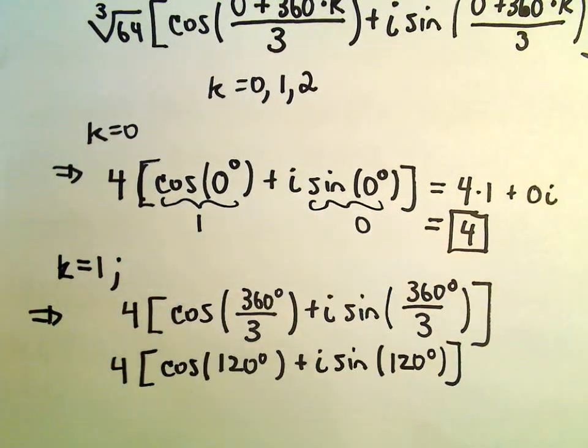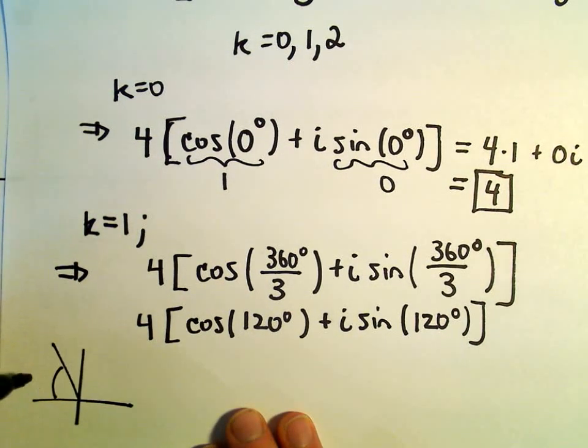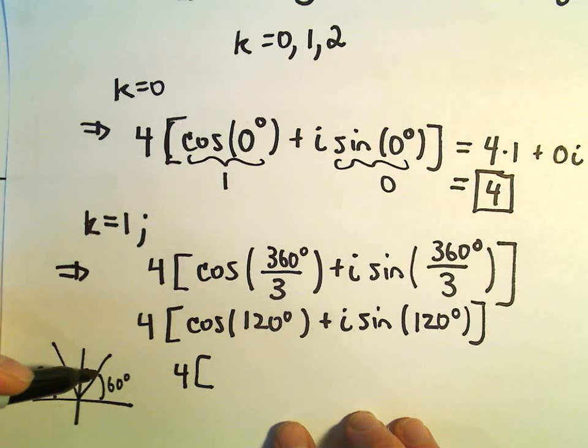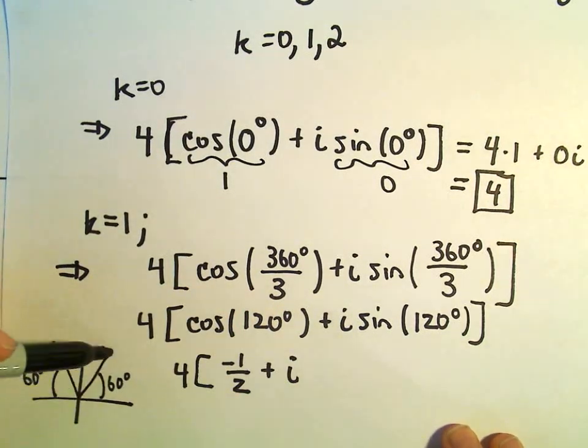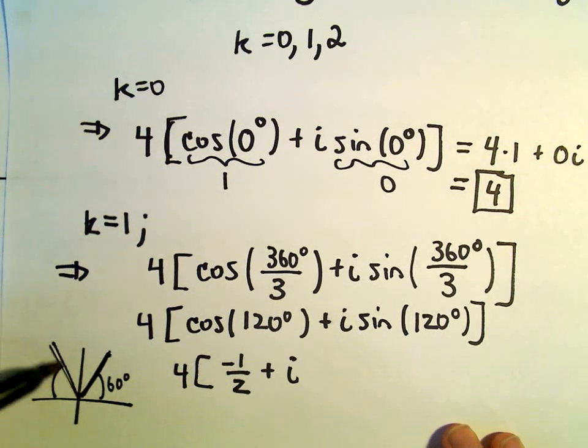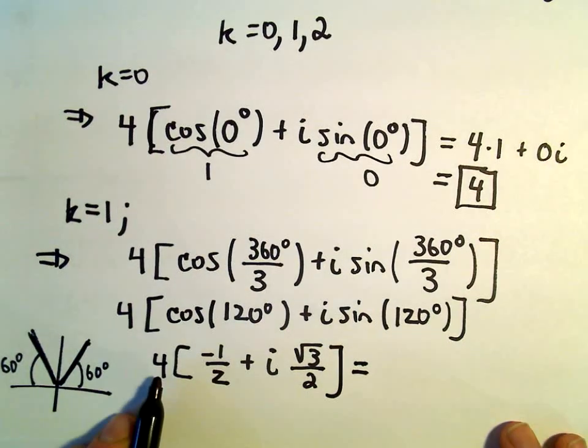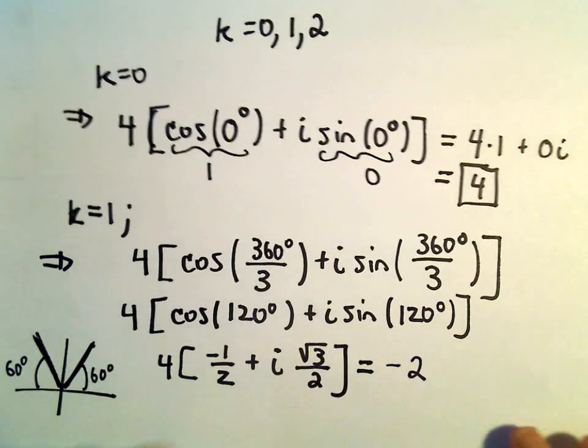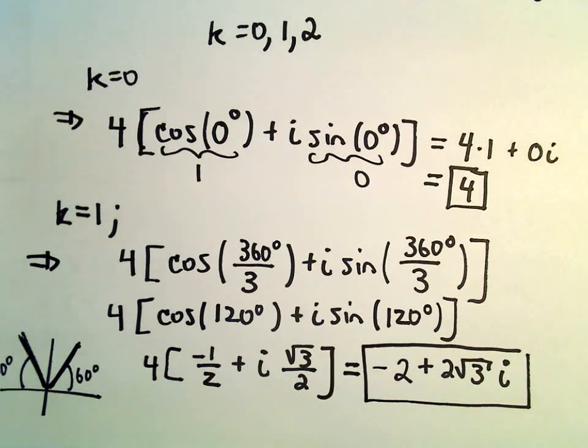We can always evaluate cosine of 120 and sine of 120. So 120 degrees, I believe that would have a reference angle of 60 degrees. Cosine of 60 degrees is going to be 1 half, but in quadrant 2, we would get actually negative 1 half. Sine of 60 degrees is root 3 over 2. Equivalently, in the second angle, it's also still positive root 3 over 2. We can distribute out the 4, so 4 times negative 1 half would give us negative 2. The 4 over the 2 would just leave us with 2 times root 3 times the i. So there's another one of our roots. I should say our cube roots, because that's what we're doing here.